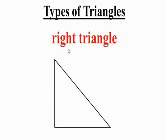Another type of triangle is the right triangle. It's called a right triangle because it has one right angle. A right angle is an angle that measures 90 degrees. So this kind of triangle is a right triangle.